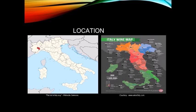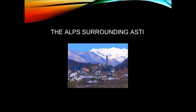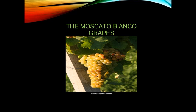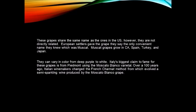Varietals of Rhone Valley: for the northern Rhone, red is Syrah; whites are Viognier, Marsanne, and Roussanne. For the southern Rhone, Châteauneuf-du-Pape is a blend of 19 grapes — 10 red and 9 white. Dominant grapes include Grenache, Syrah, Mourvèdre, Cinsault, and Counoise.